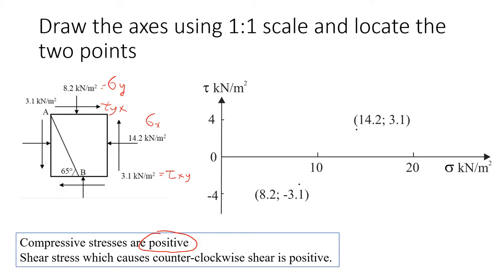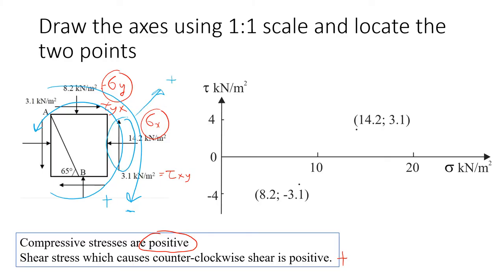Compressive stresses are positive values, but shear stresses can be positive or negative depending on their direction. In soil mechanics, shear stresses which cause counterclockwise rotation are positive. So if stresses act in the counterclockwise direction, they are positive; if they act clockwise, they are negative. In our example, this shear stress is counterclockwise, so it's positive, and this other shear stress is clockwise, so it's negative.